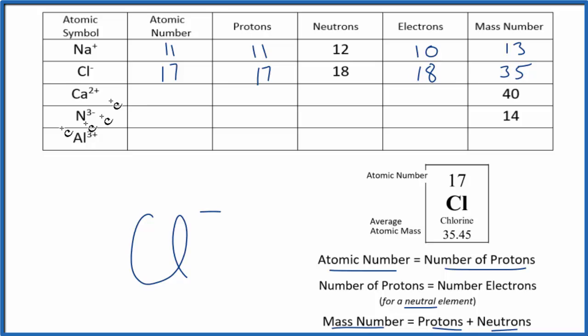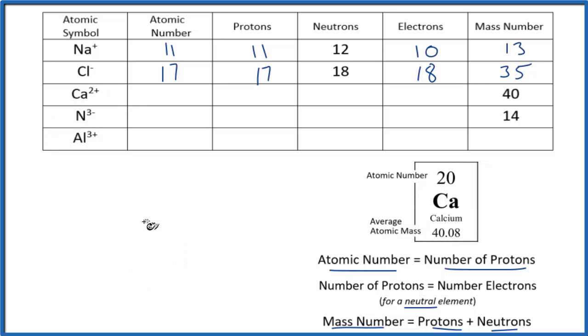Let's do the calcium ion, Ca2+. So for calcium on the periodic table, Ca, we can see that we have an atomic number of 20. We have 20 protons. And we would have 20 electrons if it were neutral, but we have Ca2+. We've lost two electrons. 20 minus 2. That'll give us 18 electrons.